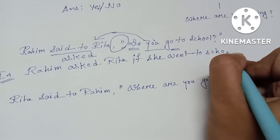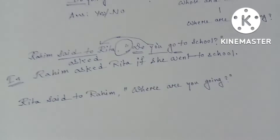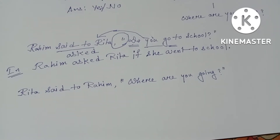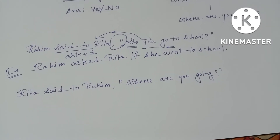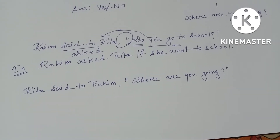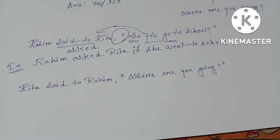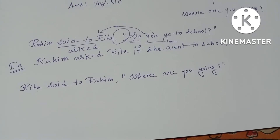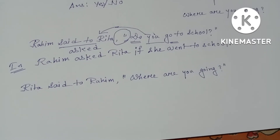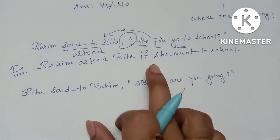Do not end the indirect sentence with a question mark. You have to change it into an assertive sentence and end with a full stop. Always keep in mind: if the direct speech is an interrogative sentence, in indirect speech it must be changed into an assertive sentence — subject, verb, object. This is the rule for yes/no questions.